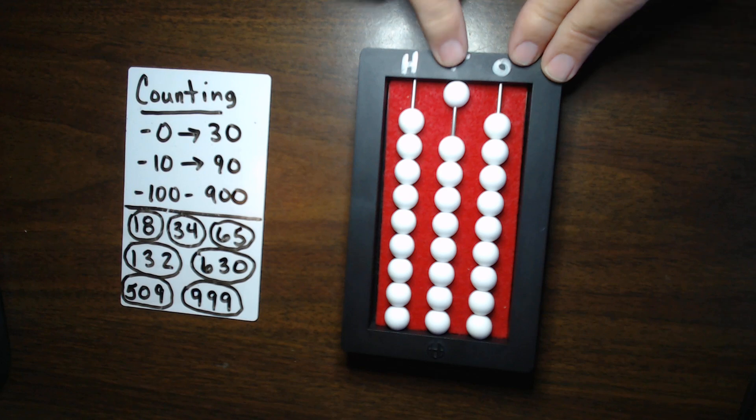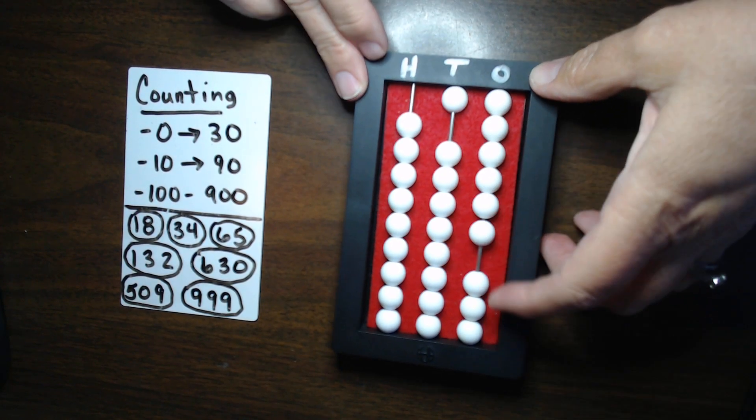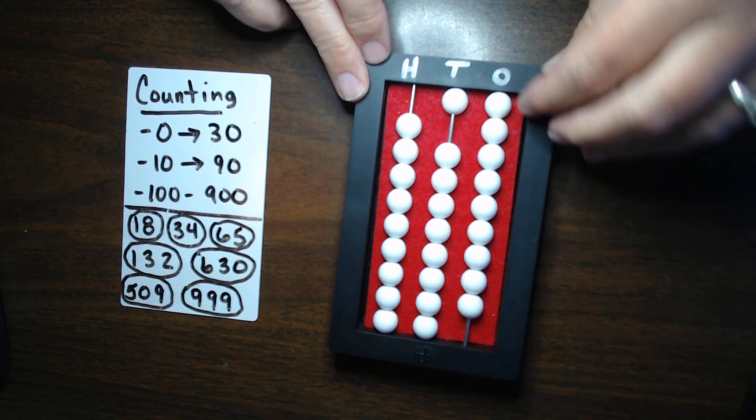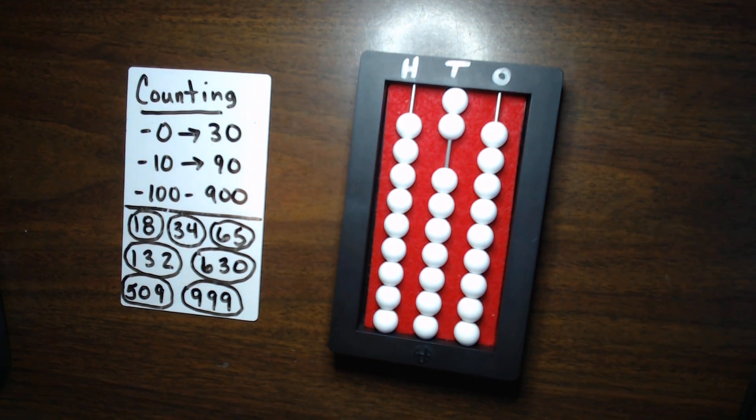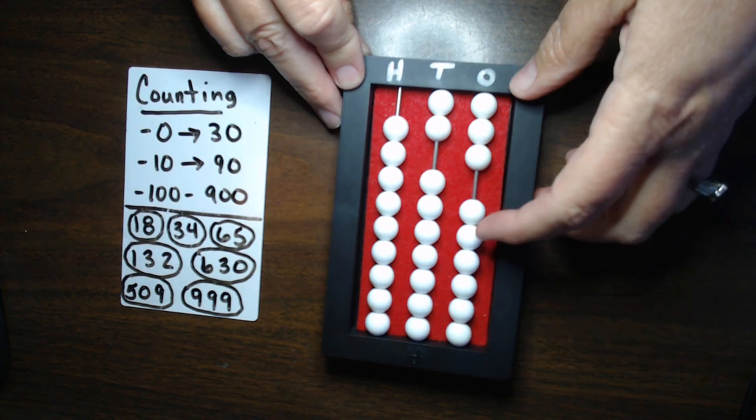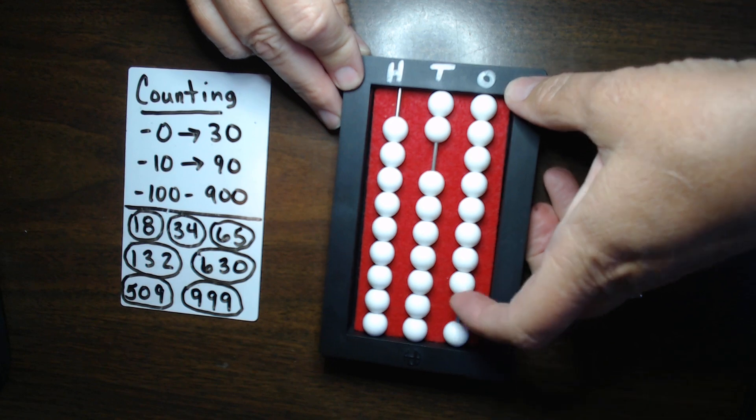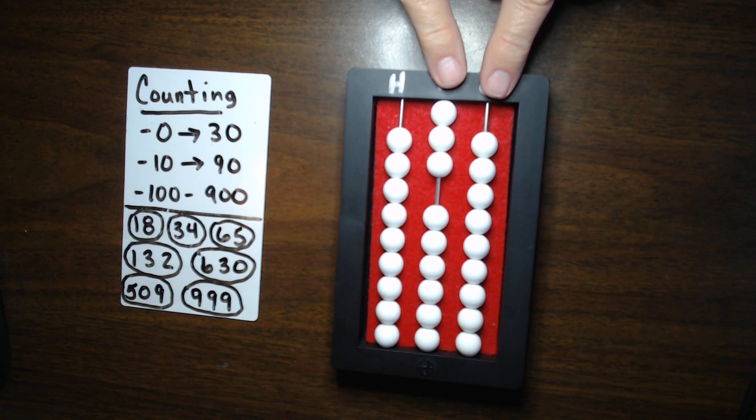And then we could keep counting. 10, 11, 12, 13, 14, 15, 16, 17, 18, 19. Same thing. 20. Clear those. So, now we have 20. I could keep counting. 21, 22, 23, 24, 25, 26, 27, 28, 29, 30. Alright. So, I keep making that exchange.